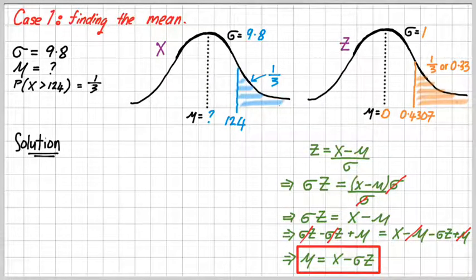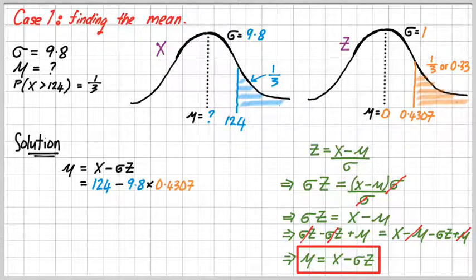So the solution is here. There's my formula that I just found. Sorry about that. There's my formula that I just found. And there's the x value, 124. I'm going to subtract the standard deviation times my z value. And I'm left with 119.78. And that's my mean.